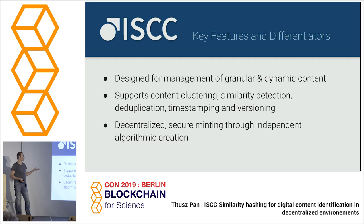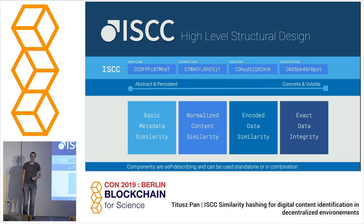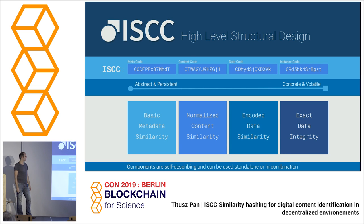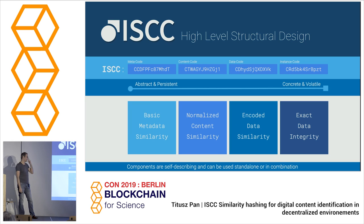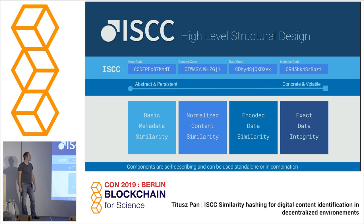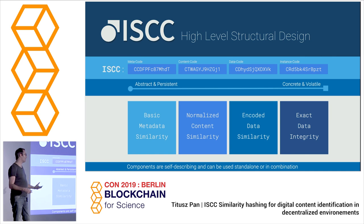The ISCC is designed for management of general, granular, and dynamic content. It supports content clustering, similarity detection, and deduplication, and it is decentralized. What it looks like: you drop in a file and you get out one ISCC code. The different components can be used separately as identifiers but are more meaningful used together. The first component is generated from metadata — very basic metadata like a title. The content code is specific to the media type. We have a data code based on raw data, and the last component is part of a cryptographic hash.